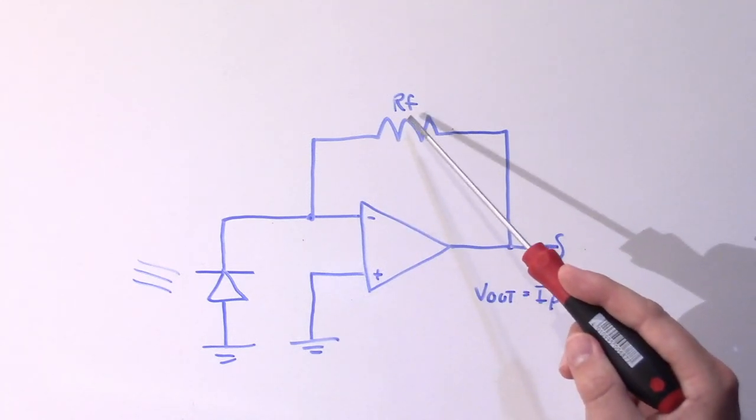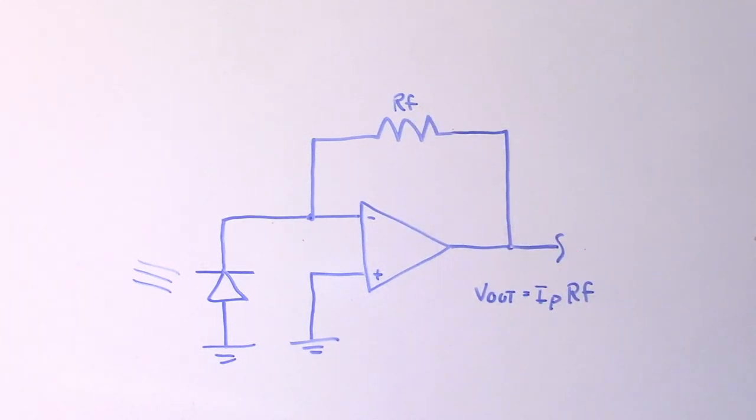And so by increasing the value of this feedback resistor, we can amplify the current signal from the photodiode and we get a voltage output from this circuit. And of course, as the intensity of the light hitting the photodiode increases, that will increase its current and we'll get a larger output voltage here. So ideally, our output voltage is going to be linear with respect to the intensity of the light striking the photodiode.